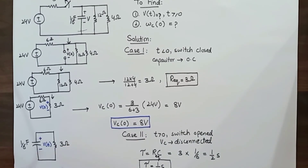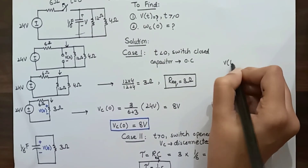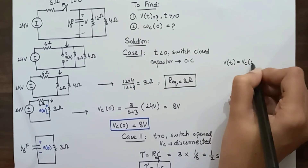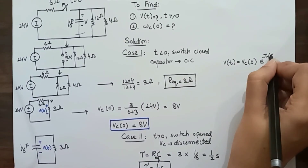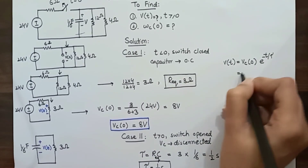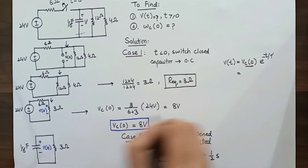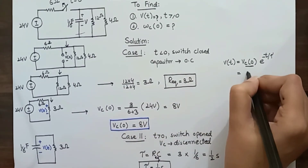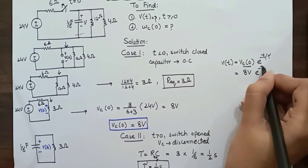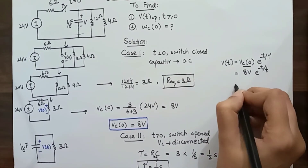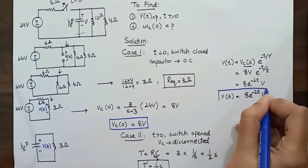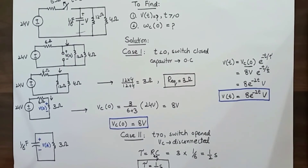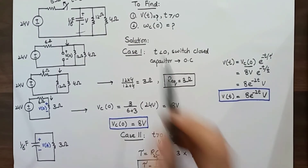From the previous video, we know the voltage response of an RC circuit is an exponential decay of the initial voltage. The formula gives v(t) = vc(0) × e^(−t/τ) = 8 × e^(−2t) volts, for t greater than or equal to zero.